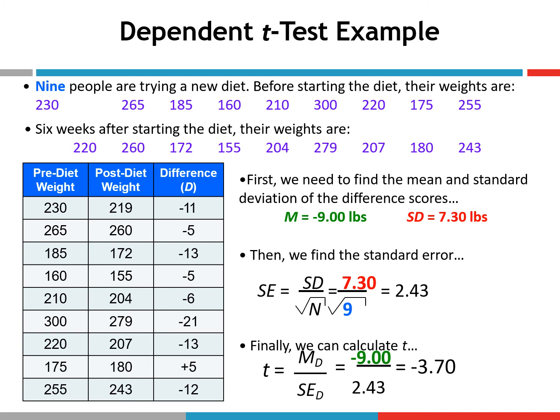Once we have the mean and standard deviation of our difference scores, we calculate the standard error of the difference scores. That's the standard deviation (7.30) divided by the square root of the sample size — square root of 9 — because we have nine participants, giving us 2.43. Finally, we calculate our t-statistic: the mean of the difference scores divided by the standard error of the difference scores, so negative 9 divided by 2.43 equals negative 3.70.